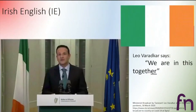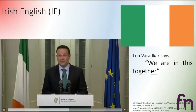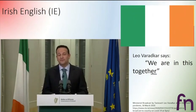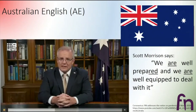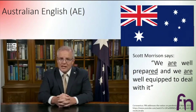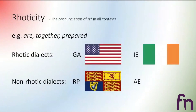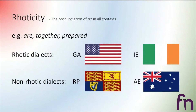What about Irish English? Our native speaker says: 'We are in this together.' The R is very prominent — he says 'together', so this is a rhotic dialect. And Australian English — our native speaker says: 'We are well prepared, and we are well equipped to deal with it.' He doesn't pronounce the R's before consonants — 'prepared', 'are' — so we would say Irish English is a rhotic dialect and Australian English is a non-rhotic dialect.